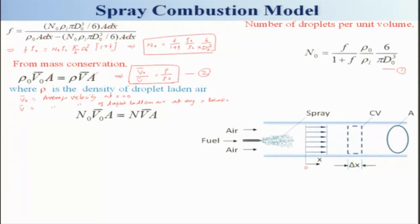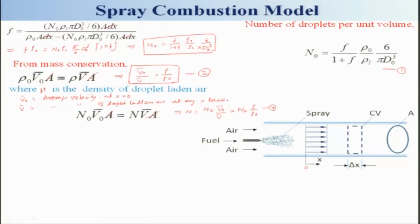Now we do the number balance. We can write n₀·v₀ = n·v, where n₀ is the initial number density, v₀ is the initial average velocity, n is the number density of droplets at any location, and v is the average velocity. This gives n = n₀·v₀/v = n₀·ρ/ρ₀ — this is equation 4.